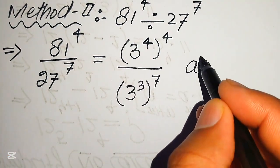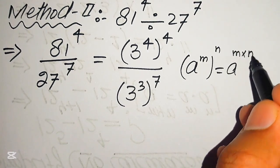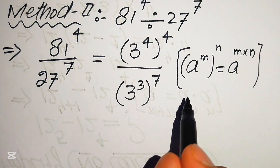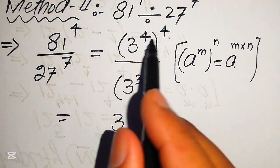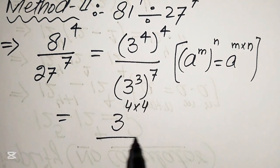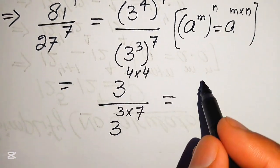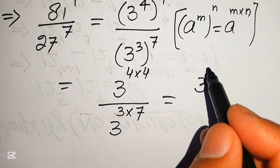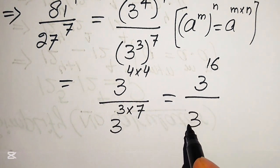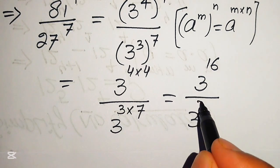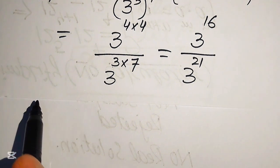We apply the exponent law: if we have a to the power of m to the power of n, it equals a to the power of m multiplied by n. Multiplying the exponents gives us 3 to the power of 4 times 4, divided by 3 to the power of 3 times 7. So this becomes 3 to the power of 16 divided by 3 to the power of 21, since 4×4=16 and 3×7=21.